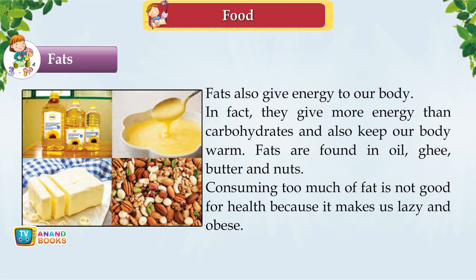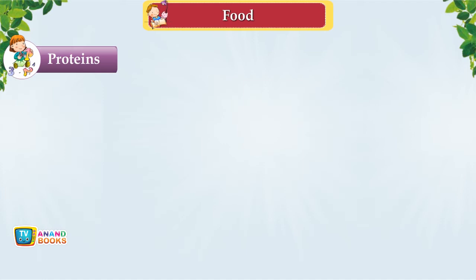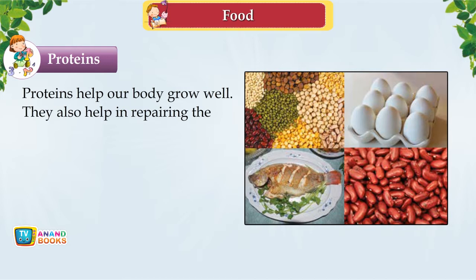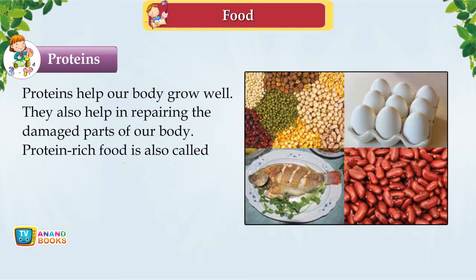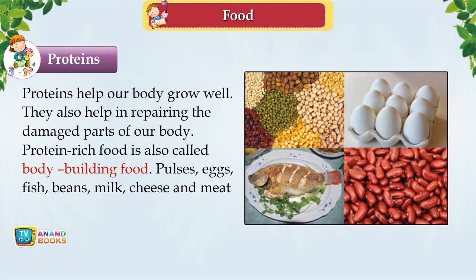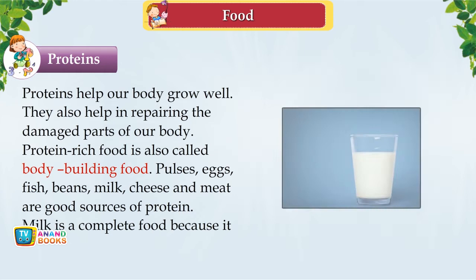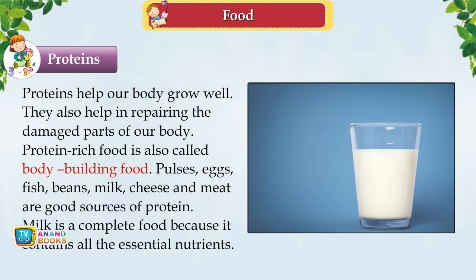Proteins help our body grow well and repair damaged parts. Protein-rich food is also called body-building food. Pulses, eggs, fish, beans, milk, cheese and meat are good sources of protein. Milk is a complete food because it contains all essential nutrients. Children need more proteins than adults because they are in their growing-up stage.